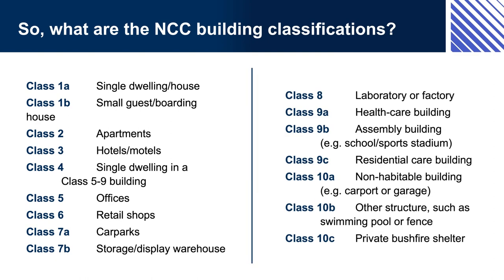Consider a single family home versus an apartment block versus a backpacker hostel versus a hotel. We might sleep, relax, and otherwise live in all of them, but a single family home would not successfully fill the purpose of a hotel or backpacker hostel, nor will it make for comfortable accommodation for multiple families. An office block versus a warehouse versus a factory versus a small retail shop front — people might work in all of these buildings, but the work they are doing varies along with the number of people who might work in each one, the number of visitors they might get, and the other materials they might keep in the space.